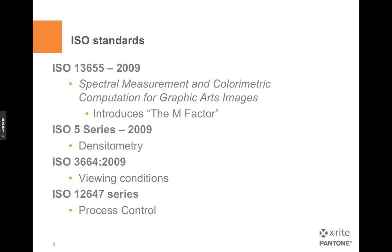Today we're really going to talk about ISO standards primarily. The big one we're going to talk about here is ISO 13655 — Spectral Measurement and Colorimetric Computation for Graphic Arts Industries. This is the standard that defines how we measure color. In this particular edition, it introduces something called the M factor, or different color measurement modes. This is a big piece of the discussion. From 13655, other standards also pick up some pieces dealing with these new illumination ideas, and all of this comes back from the issues of OBAs, or optical brightening agents.